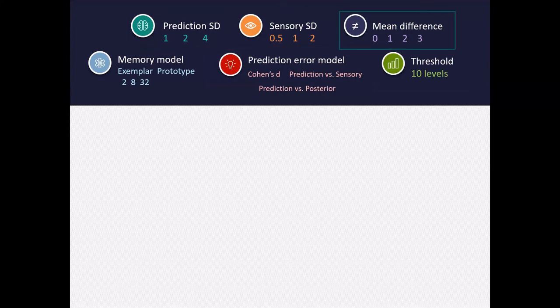Is it the actual difference between what I predict and observe? Is it based on how I make my predictions? Does it matter how I calculate the prediction error? And does it matter how low or high my threshold for being surprised is?